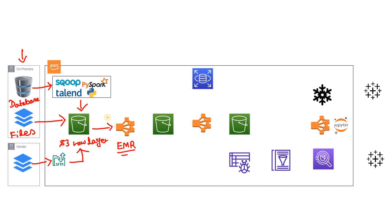The EMR cluster reads the raw layer data, processes it — for example, cleaning the data, making sure the schema is matching, or doing data validation — and then loads it into another S3 layer termed the S3 process layer. It is called the process layer because EMR reads data from different source systems in the S3 ingestion layer, performs data validation and data quality checks, and dumps the output there. Data sitting in this S3 process layer will be used for applying business logic, transformation, and further processing.